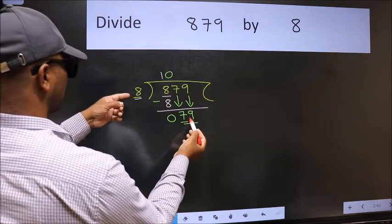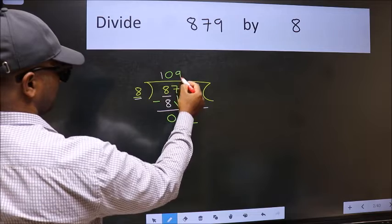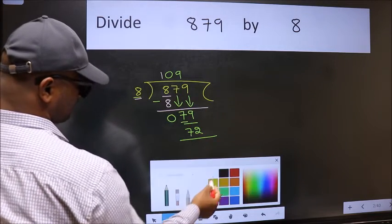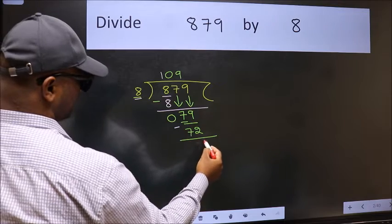A number close to 79 in 8 table is 8 nines 72. Now we should subtract. We get 7.